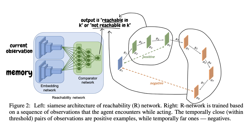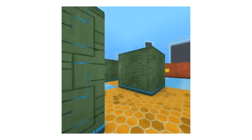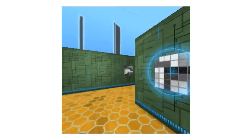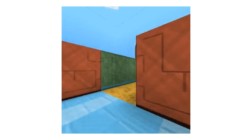Alternatively, the output can be a binary classifier that states whether the observation is reachable in some k steps or not reachable in some k steps. The results are pretty astounding — we now have an agent that explores the world and no longer loops in a corner.